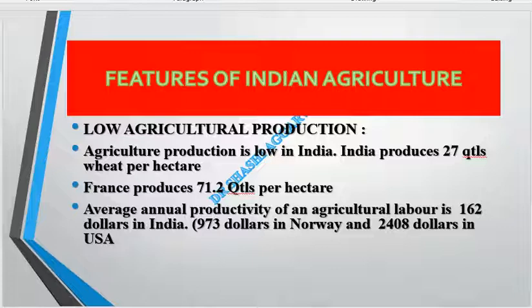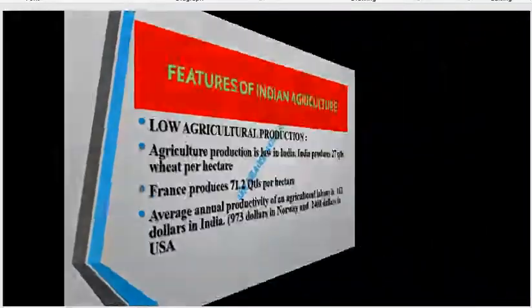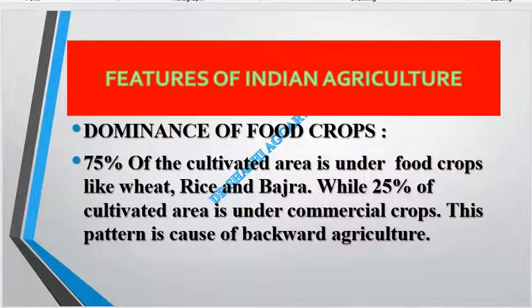As compared to other nations, Indian productivity is very low. The average annual productivity of an agricultural laborer in India is $1,620, while in Norway it is $9,730, and in the USA it is much higher. Indian agriculture uses 75% of its cultivated area for food crops and only 25% for commercial crops.